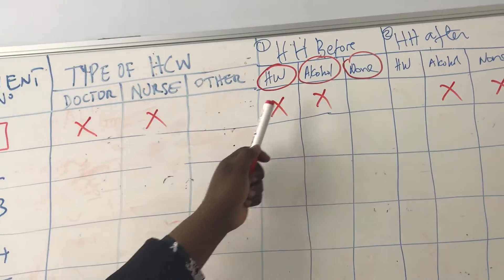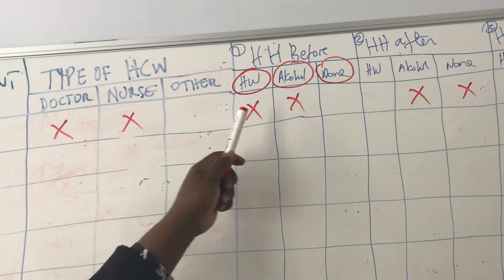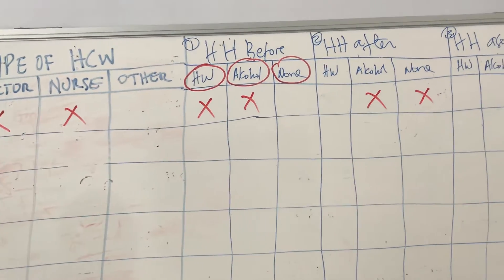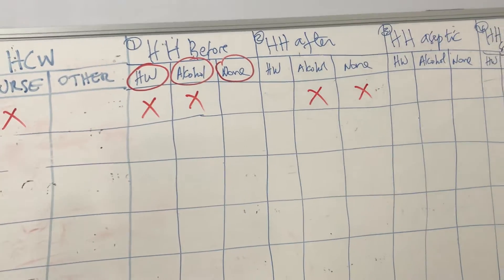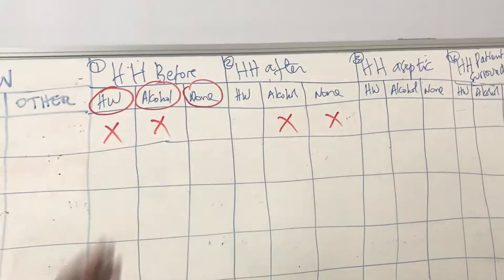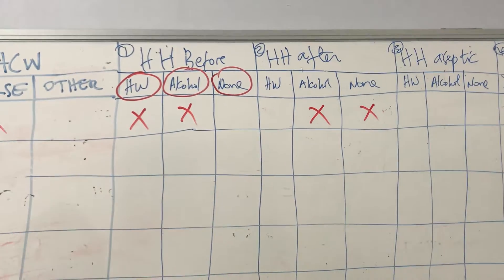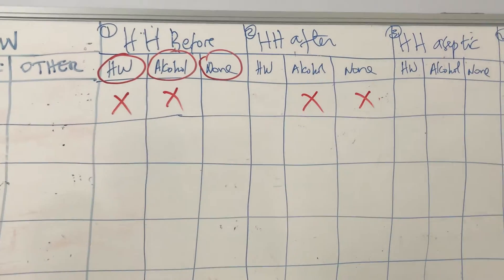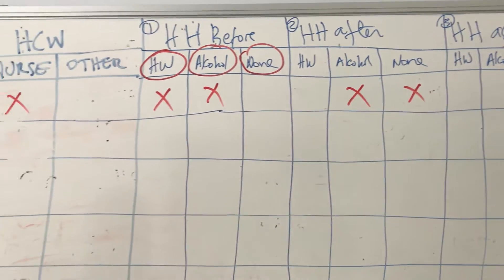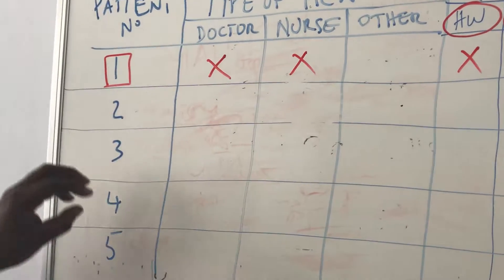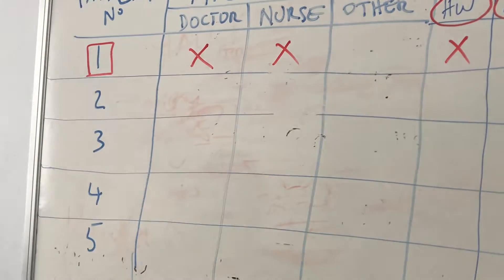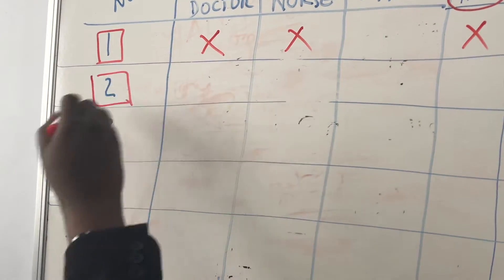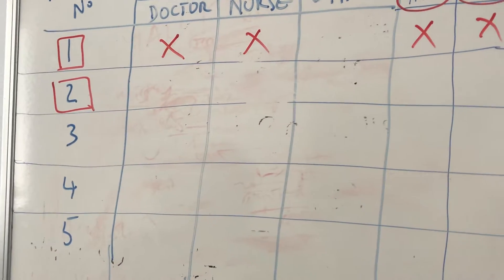This is to show you that for one indication, you have different opportunities. The doctor was there, the nurse was there, and everyone has separate opportunities to wash hands before patient contact and after contact. Then here we have patient number two, and you check the same thing.